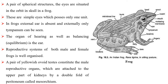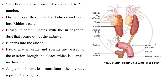Reproductive systems of both male and female frogs are well organized. A pair of yellowish ovoid testes constitute the male reproductive organs, which are attached to the upper part of the kidneys by a double fold of peritoneum called the mesorchium. Vasa efferentia arise from testes and are 10 to 12 in number. They enter the kidneys and open into Bidder's canal. Finally, it communicates with the urinogenital ducts that come out of the kidneys and open to the cloaca. Faecal matter, urine and sperms are passed to the exterior through the cloaca, which is a small median chamber.